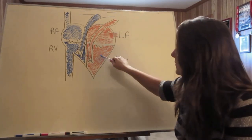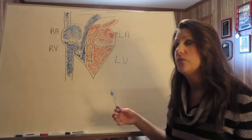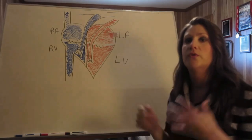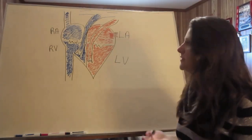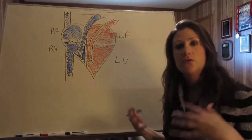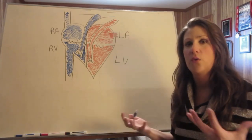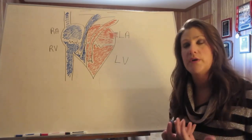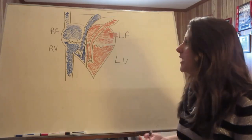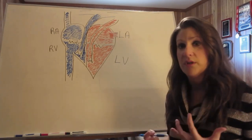From the left ventricle, the blood enters the aortic valve and is pumped out through the aorta. That is a simple run-through of blood flow through the heart.